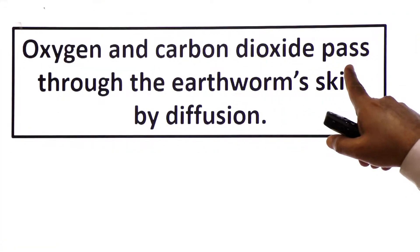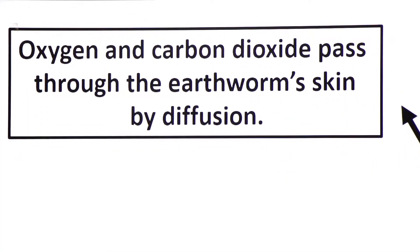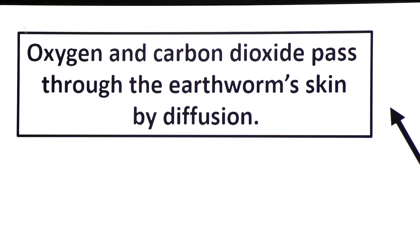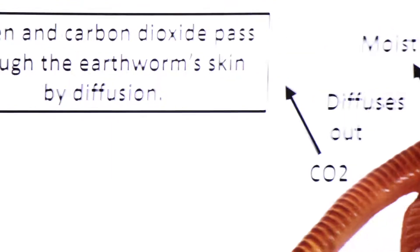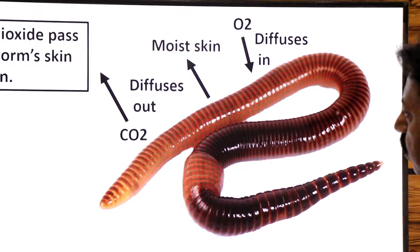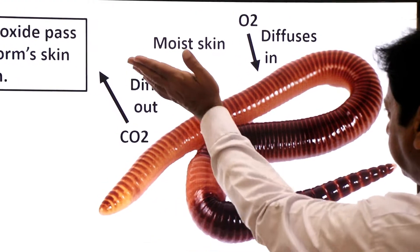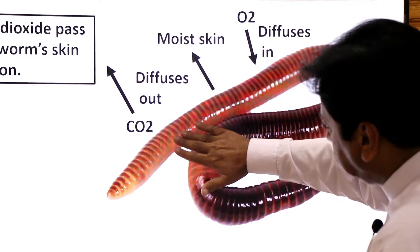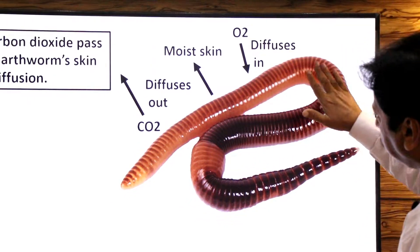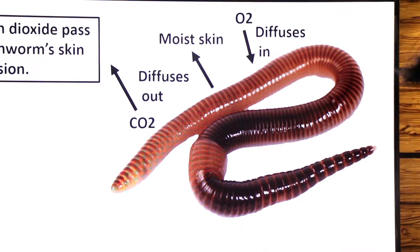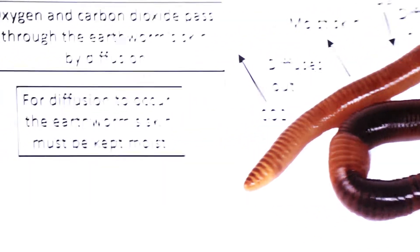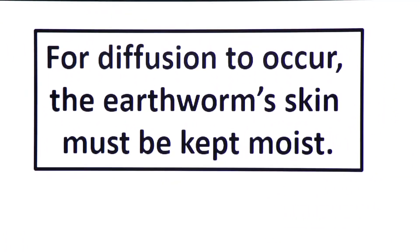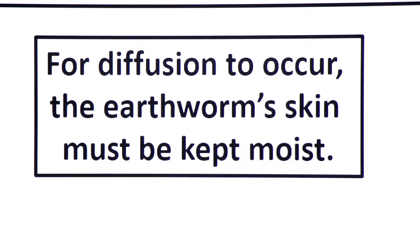Oxygen and carbon dioxide pass through the earthworm's skin by diffusion. For diffusion to occur, the earthworm's skin must be kept moist, so the earthworm's skin always remains moist.